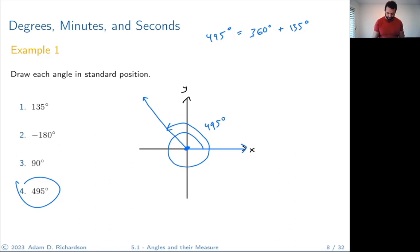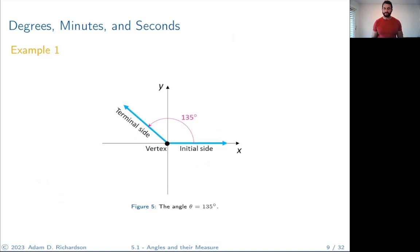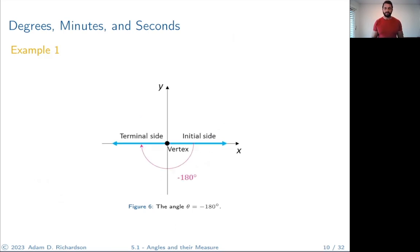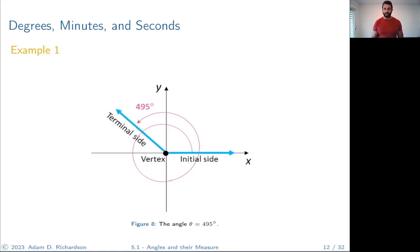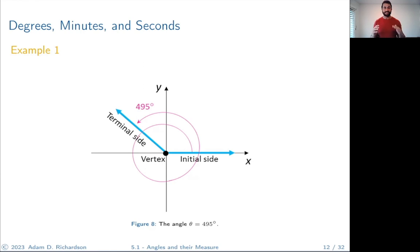Let's check: 135 degrees, negative 180 degrees, 90 degrees, and 495 degrees — not bad. If you've got questions about any of these, please ask them in the discussion forums. Mathematics is always supposed to make sense.